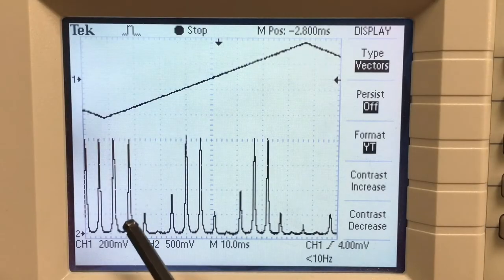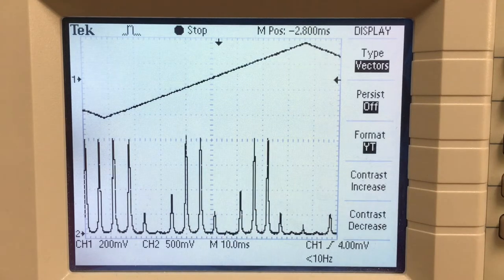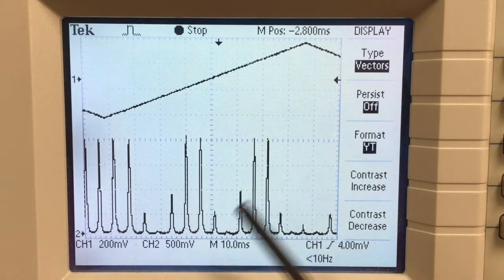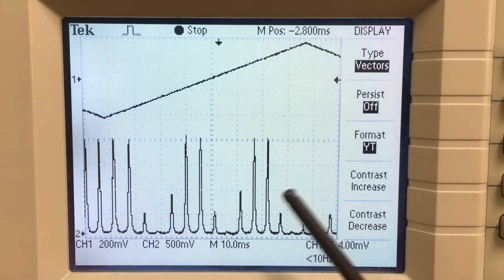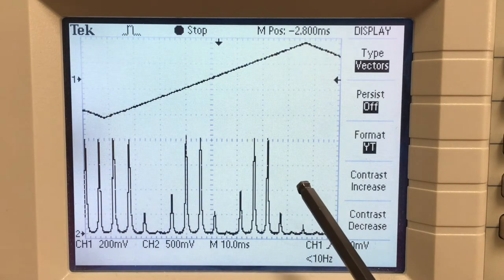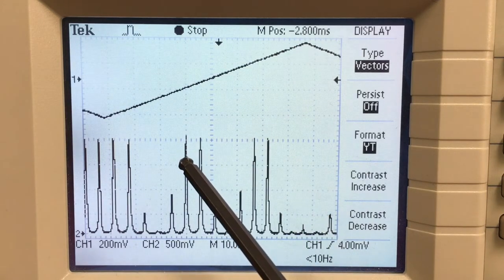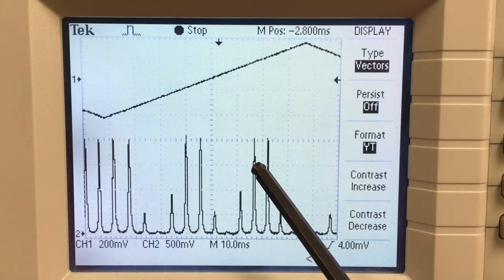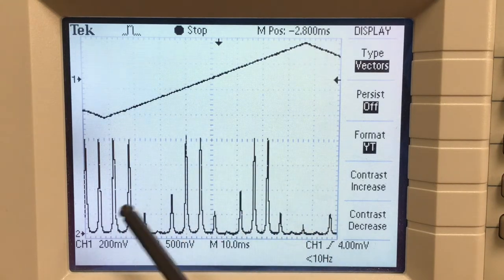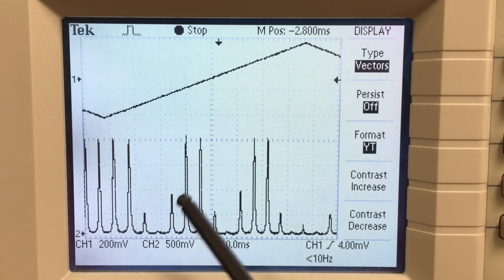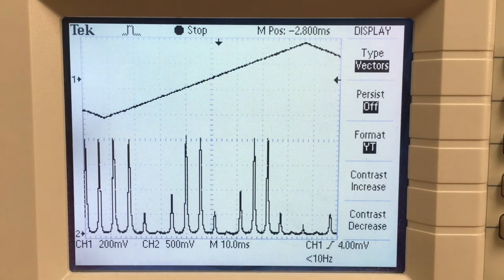So the periodicity of this pattern is what's called the free spectral range. And you can calculate that just from knowing the spacing of the mirrors at 38.6 millimeters. So now we can calibrate the horizontal scale on the oscilloscope. If we know the frequency spacing between, say, this peak and where it repeats over here, that's the free spectral range. That gives us a calibration scale for our oscilloscope in terms of frequency per unit time across the scan.